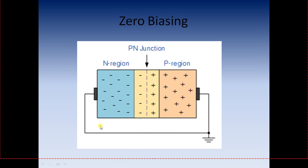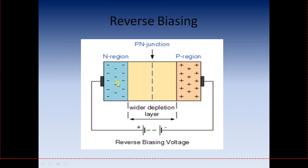The breakdown is caused by minority carriers: there are some holes present in the N region and some electrons present in the P region. They gather so much energy that they break through the depletion region and the entire crystal structure, and current flows. There is no resistance — it is a pure flow of current, independent of voltage. At that point, your diode would be useless.